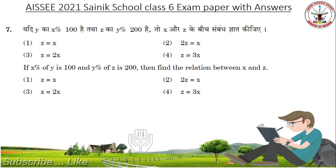If X% of Y is 100 and Y% of Z is 200, then find the relation between X and Z. Check the options. If you know the answers, please put the comments below. And don't forget to subscribe if you gain the information. Answer is Z equal to 2X.